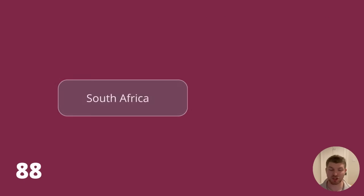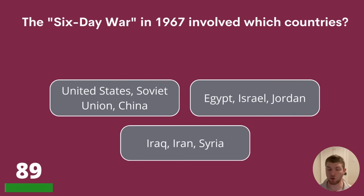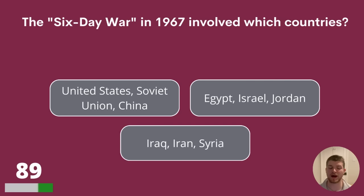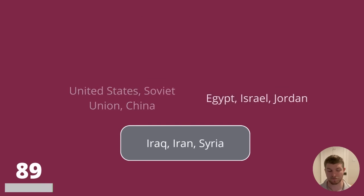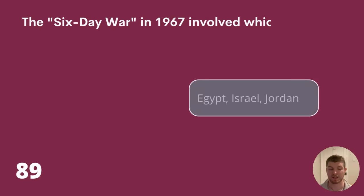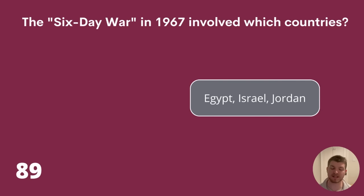Question 89. The Six-Day War in 1967 involved which countries? United States, Soviet Union, and China; Egypt, Israel, and Jordan; or Iraq, Iran, and Syria? The answer is Egypt, Israel, and Jordan.